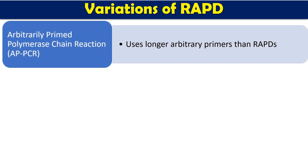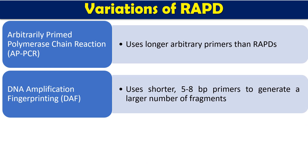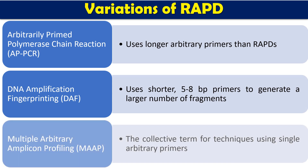There are many variants of RAPD also available. One variant is Arbitrary Primed PCR, which was already discovered in 1990 by different groups; they used a longer arbitrary primer than in RAPD. In RAPD we use roughly 10 to 15 base pair oligonucleotides, but in Arbitrary Primed PCR you can use longer primer sequences. DNA Amplification Fingerprinting (DAF) normally uses shorter primers than RAPD, so the primer binds at many places and a large number of small fragments can be obtained. Multiple Arbitrary Amplicon Profiling (MAP) is a collective term for techniques using single arbitrary primers. These are the three important variants, though several other variants also exist.